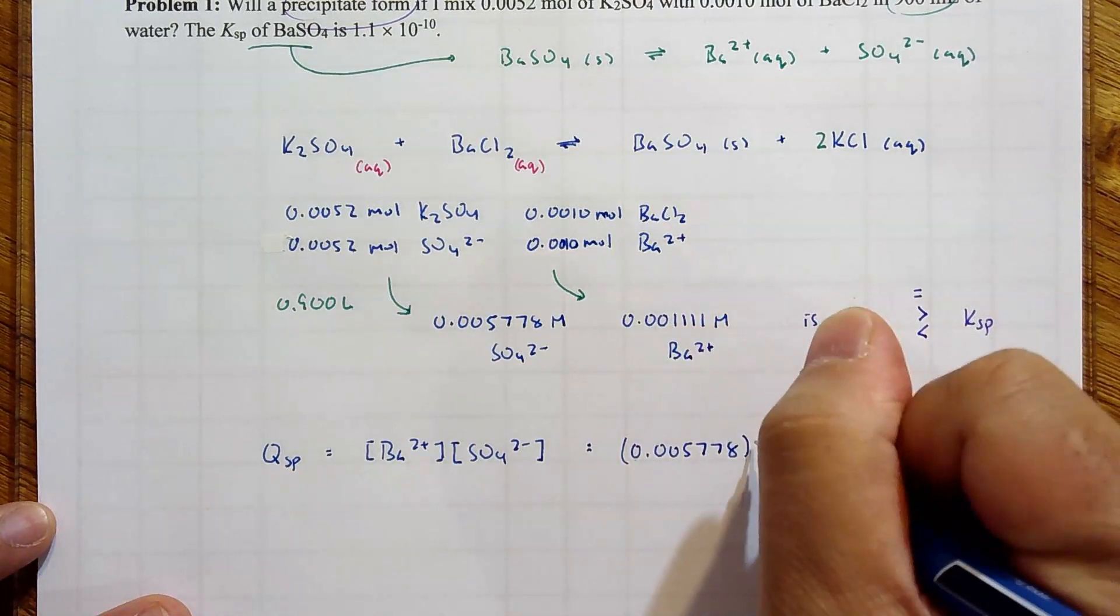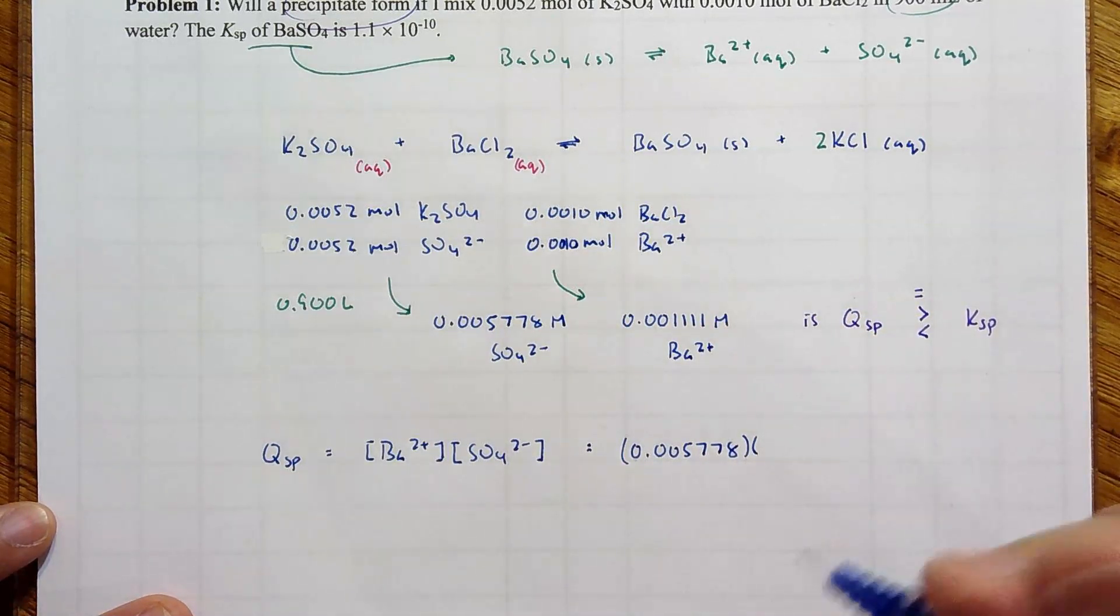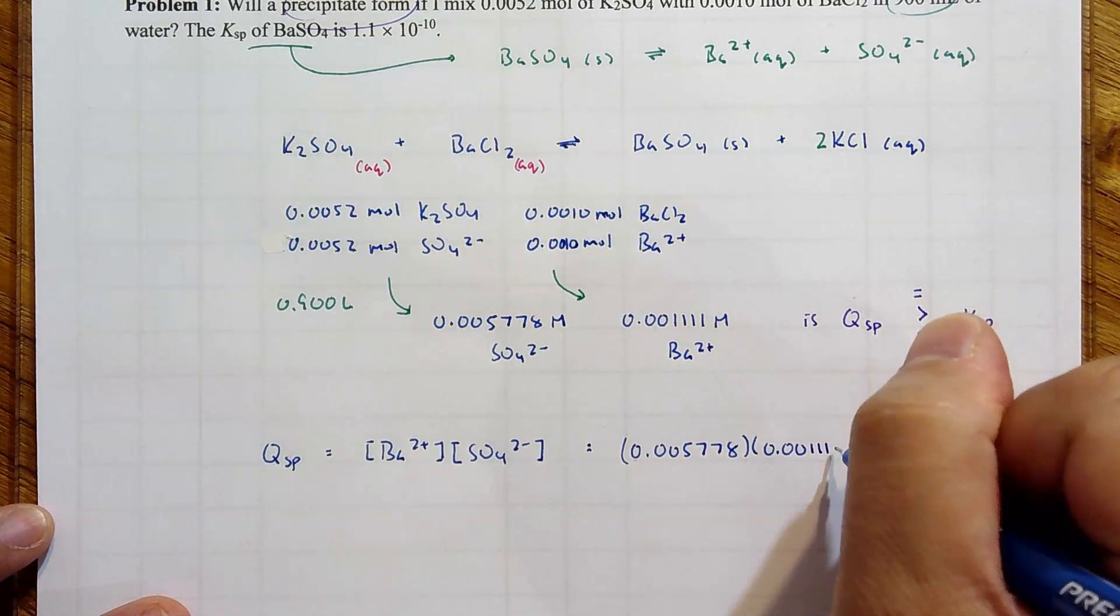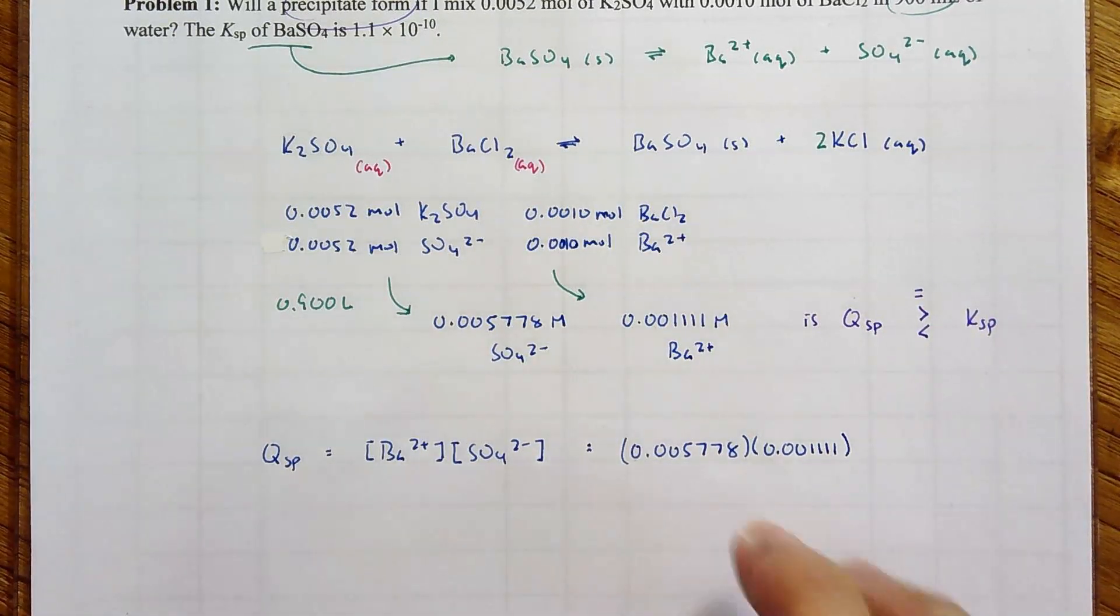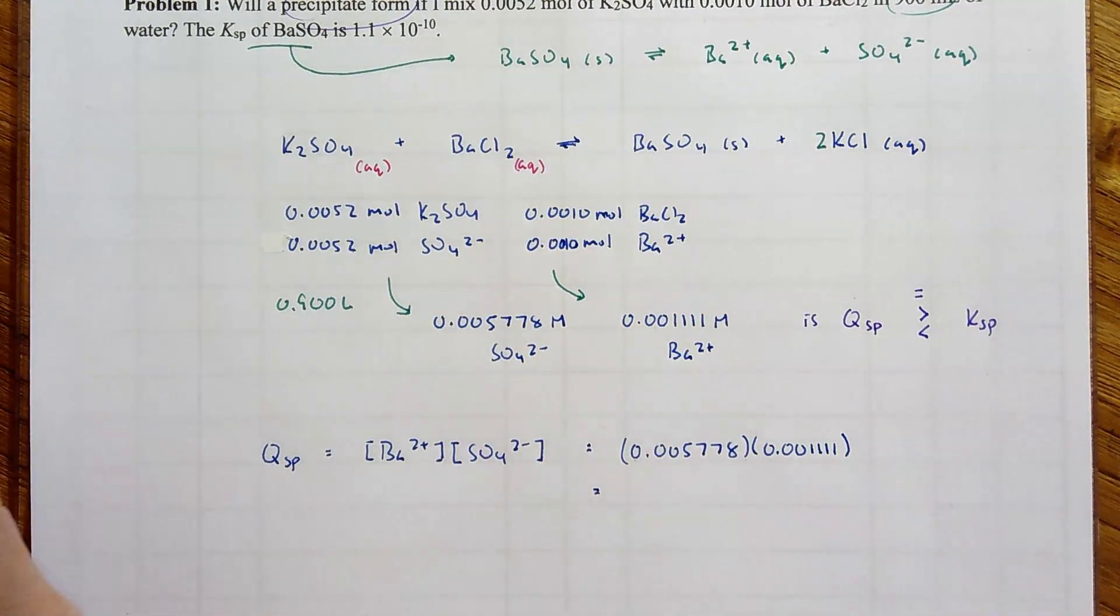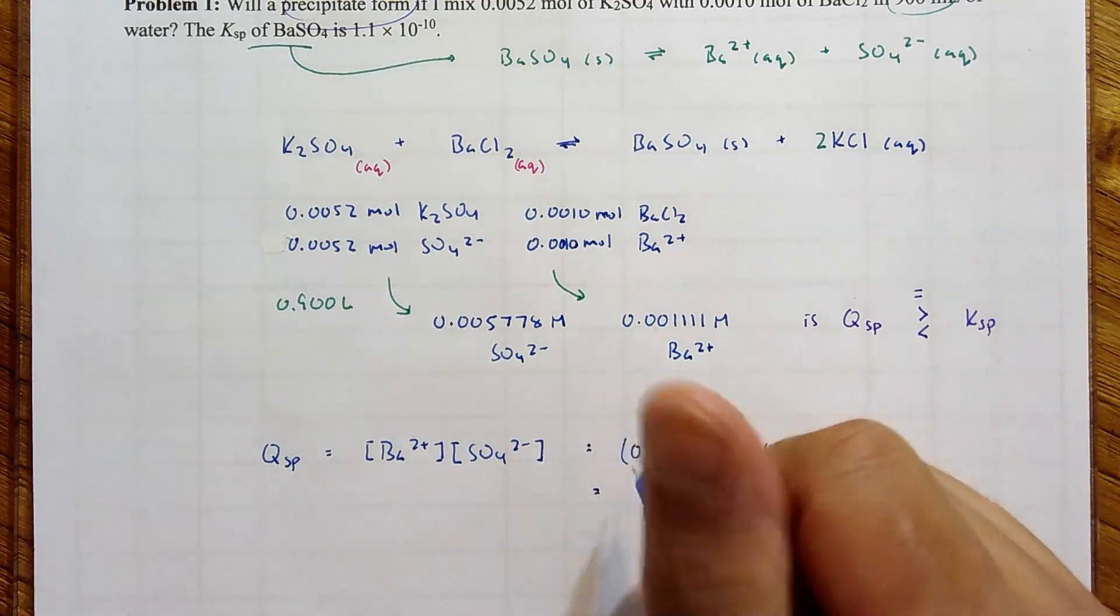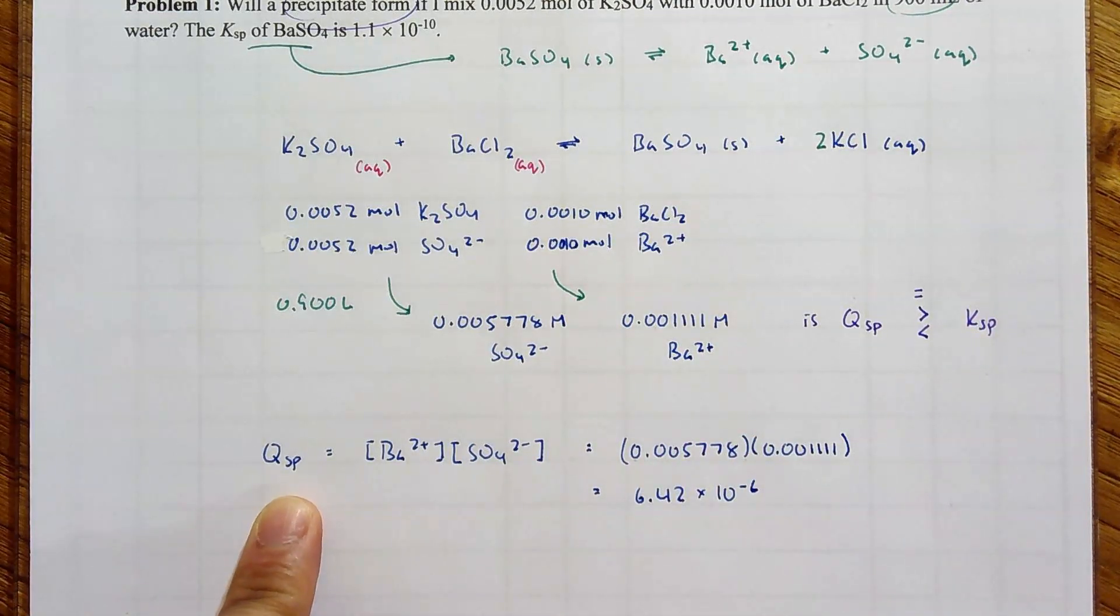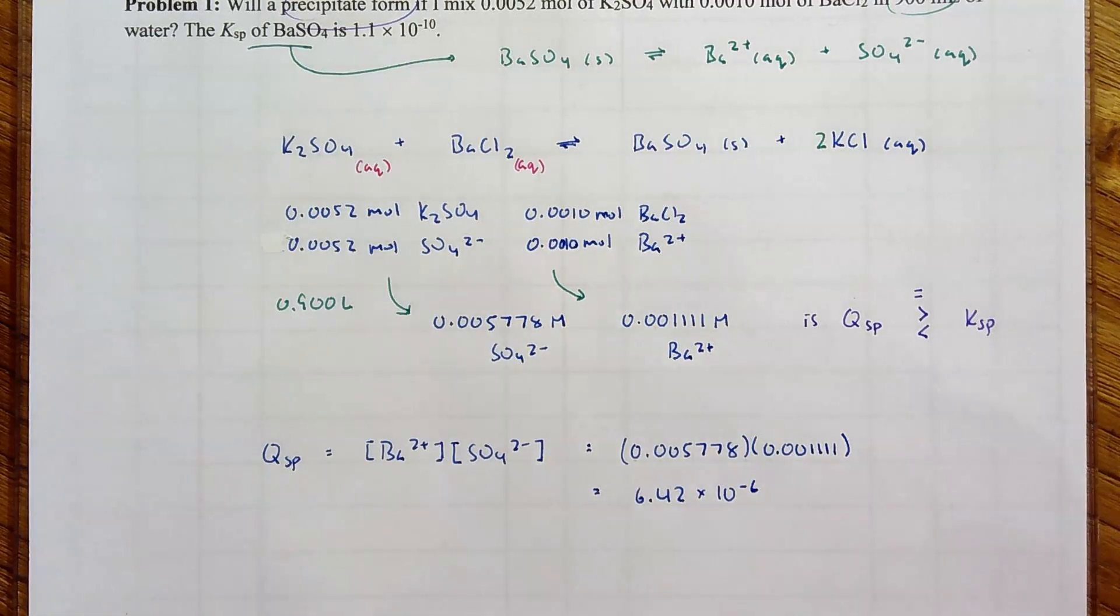So we're almost there. I want to give ourselves more significant figures than what we expect at the end or that we should put in the end, just so we don't accidentally round ourselves out of a correct answer. However, too much rounding or rounding to less significant figures can cause you to get a wrong answer. Equals 0.005778 times 0.001111. I got, let me get into scientific notation, I got 6.42 times 10 to the minus 6. That is Qsp. I just want to double check my answer. Okay awesome, that's Qsp.